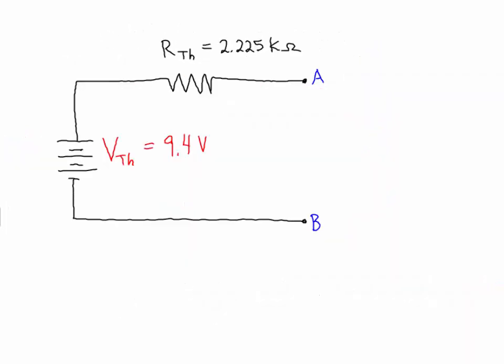So our Thevenin equivalent circuit is a 9.4 volt source in series with a 2.225 k ohm resistance between the output terminals A and B. That means if we were to connect any load resistor there, any load, it would see that voltage and that resistance, the same as it would from the original circuit.